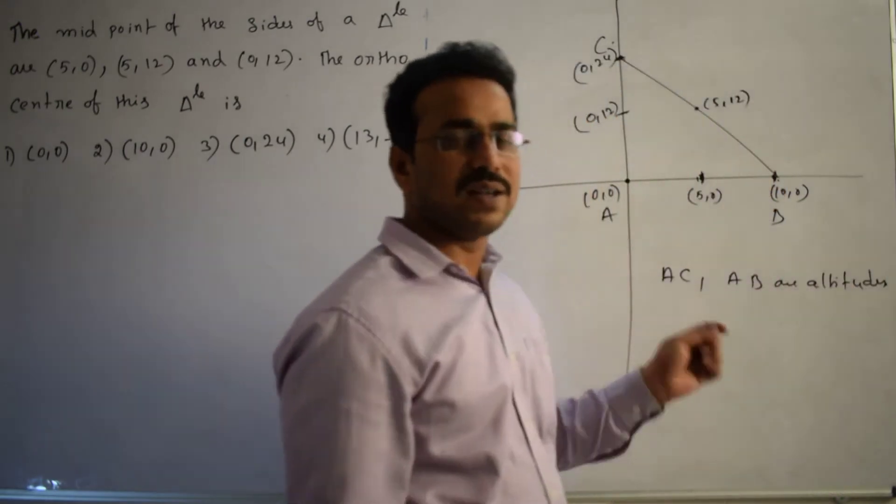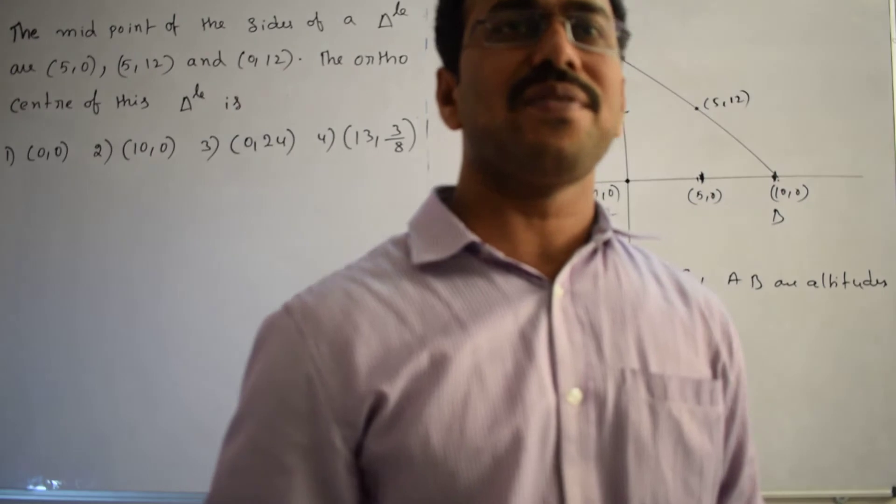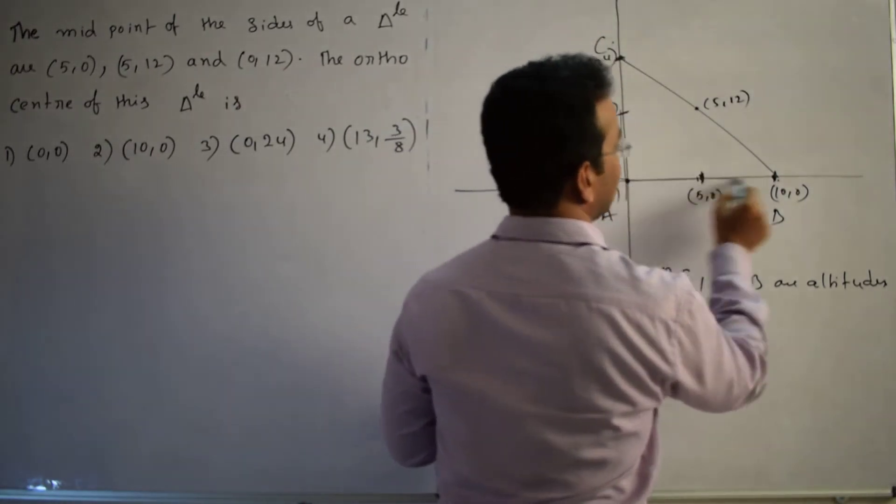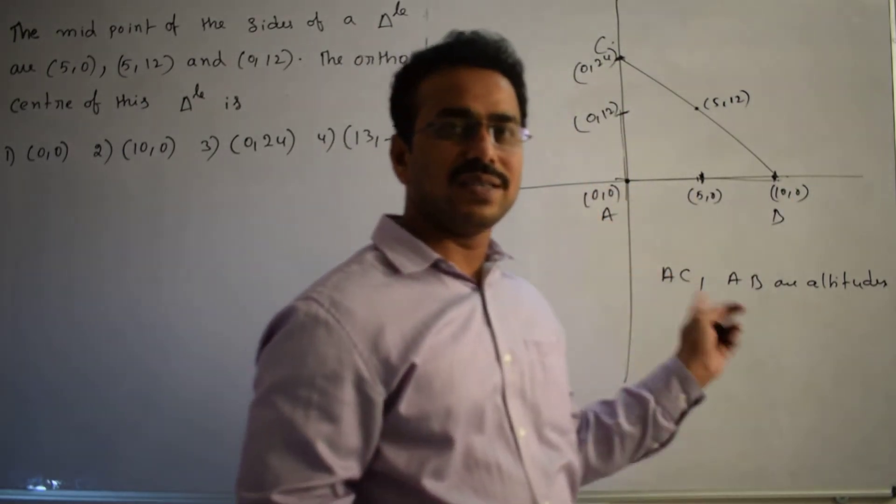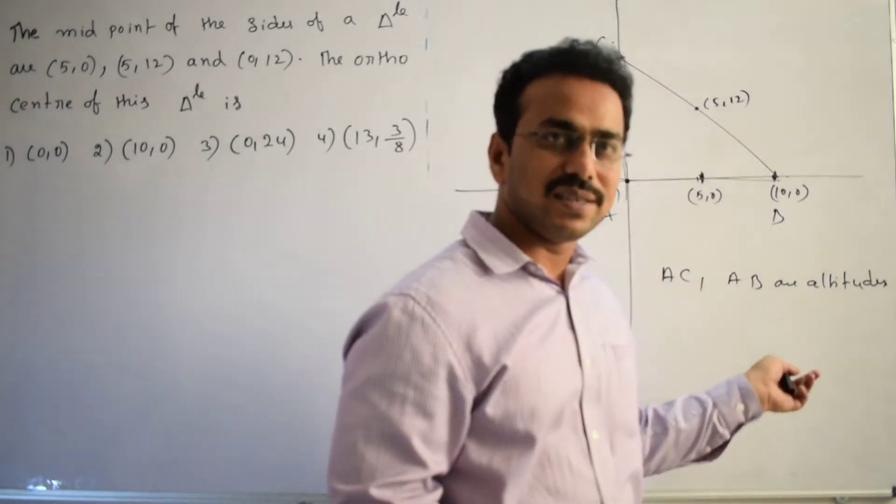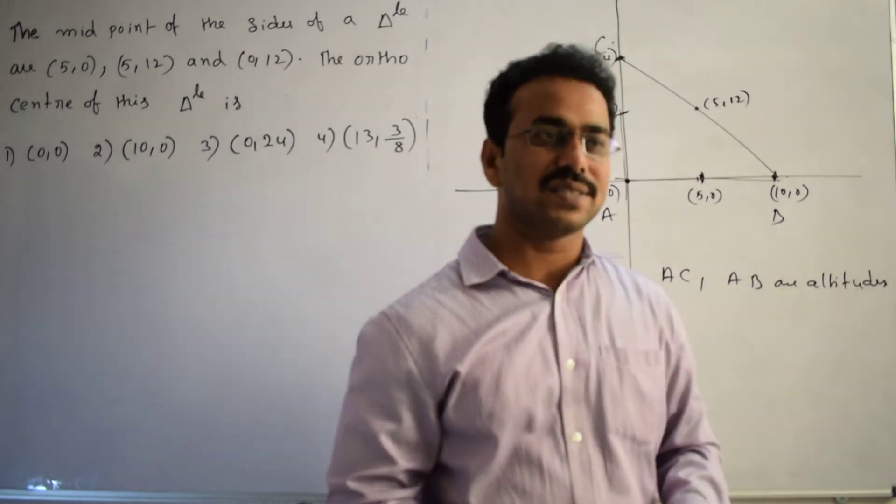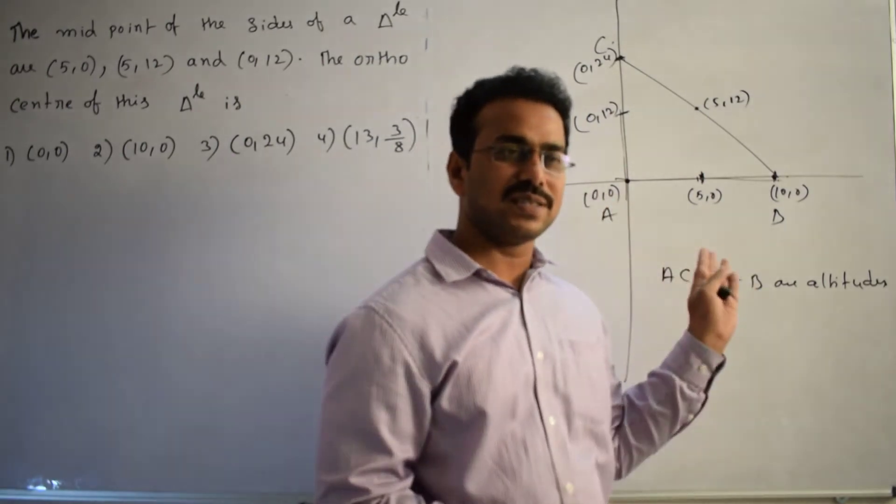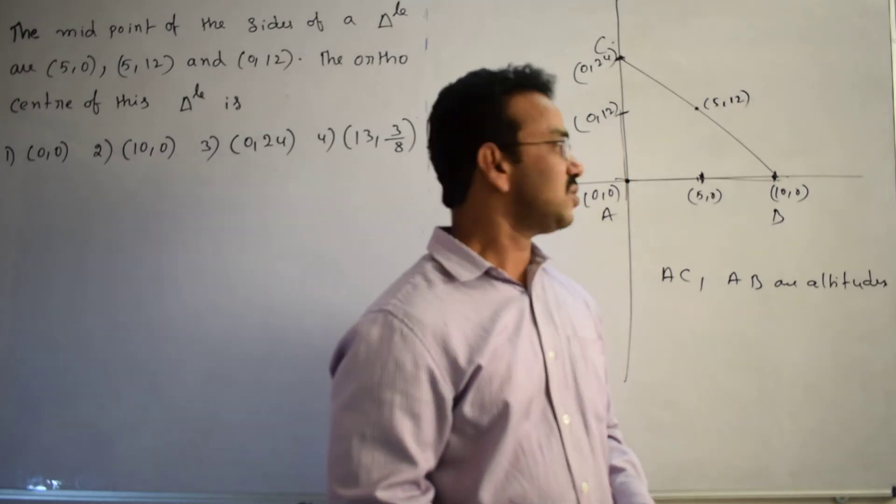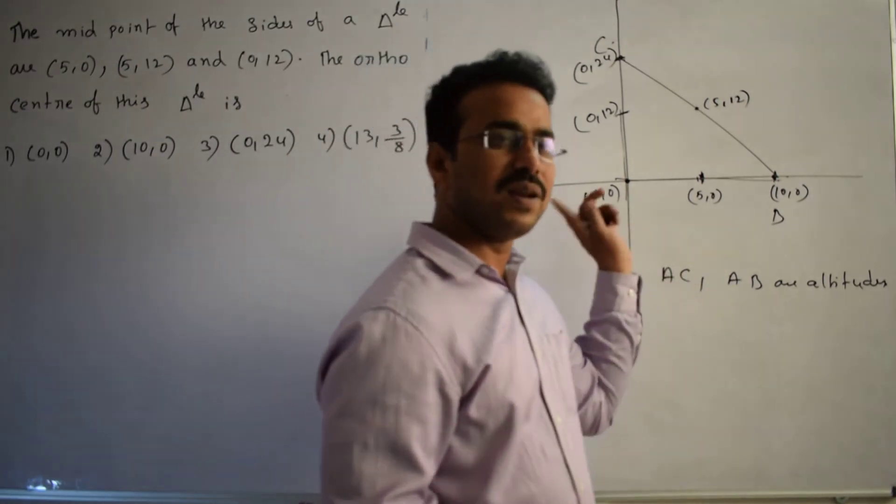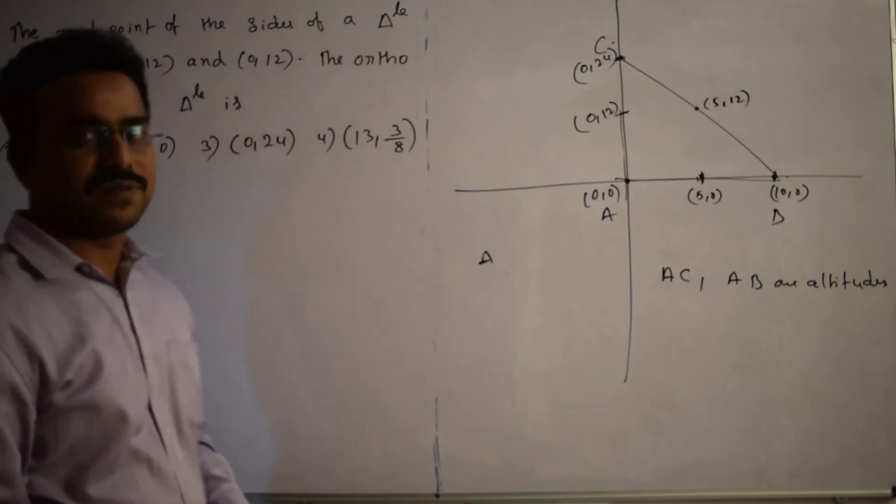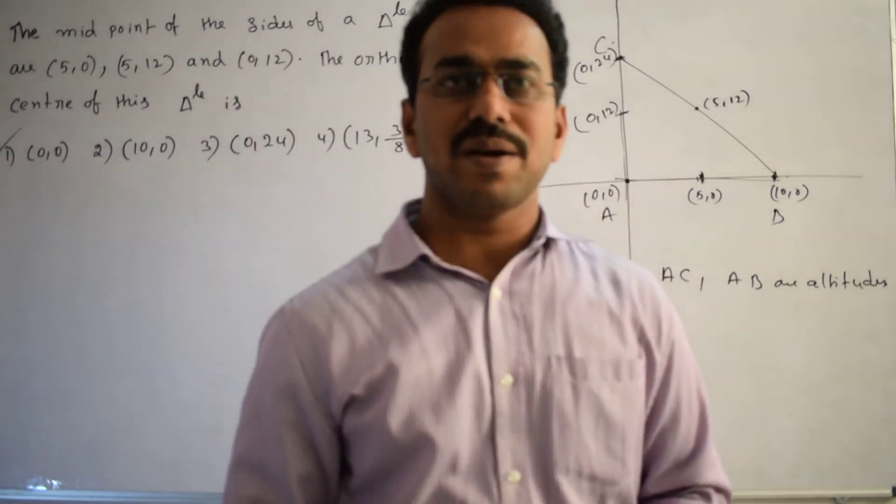So what is the definition of orthocenter? Point of intersection of altitudes equals to orthocenter. So what is the point of intersection? This line and this line, simply (0,0). Origin is the orthocenter for the given question. So this is a logical question. Don't waste the time to calculate the equation of altitudes and then point of intersection. It takes lots of time. It's very lengthy. So let us compare with our available options. What is the first option here? (0,0). So this is correct. The rest of the options are incorrect. So the final answer is orthocenter equals to (0,0).